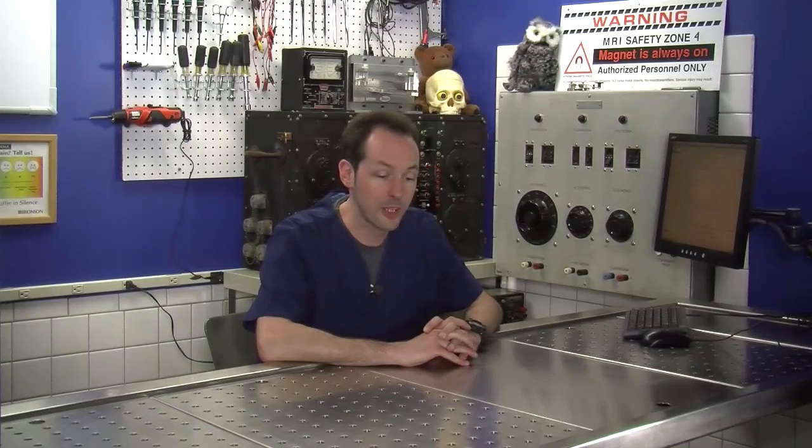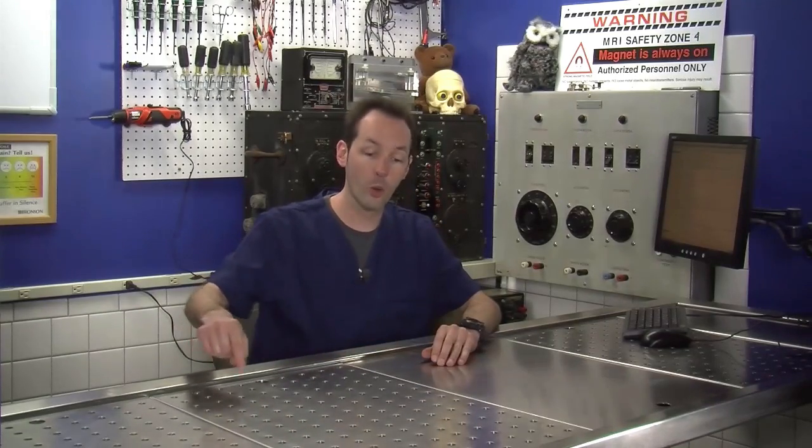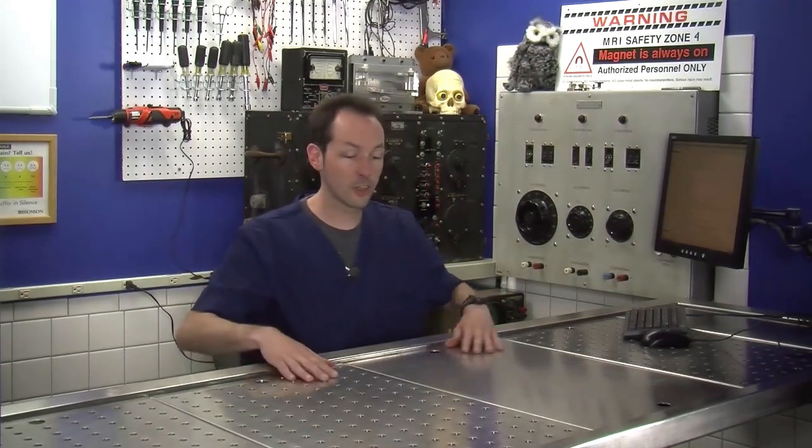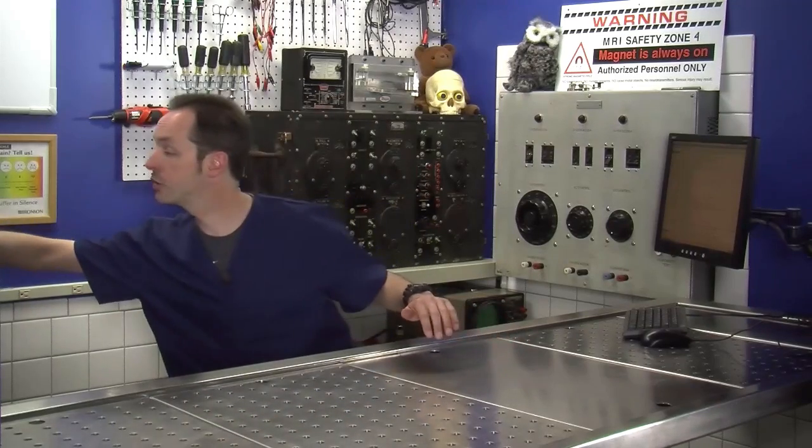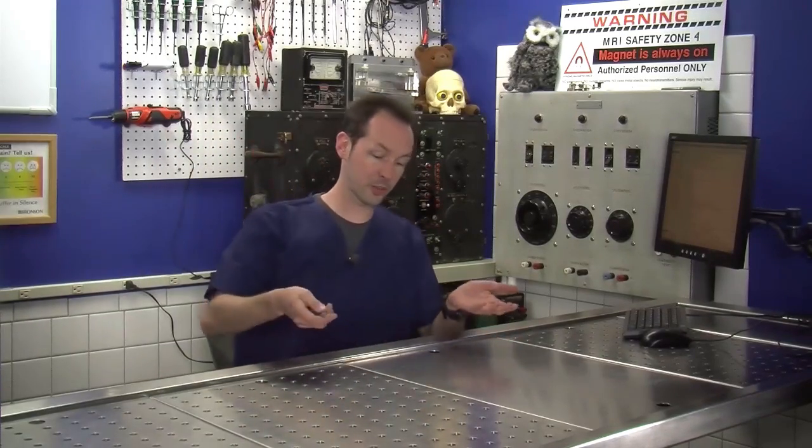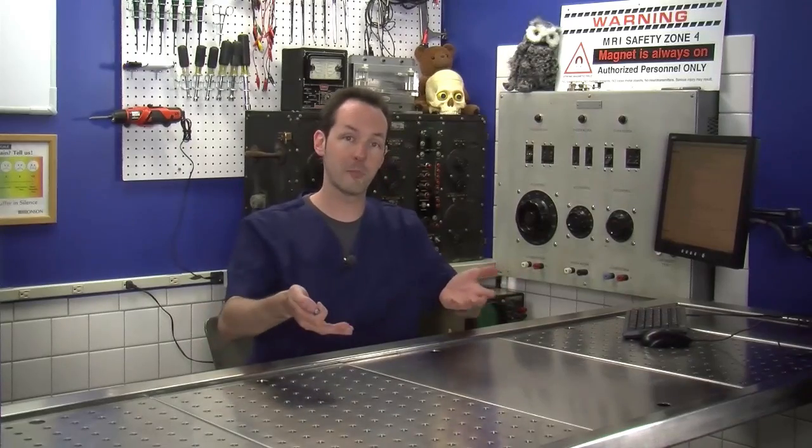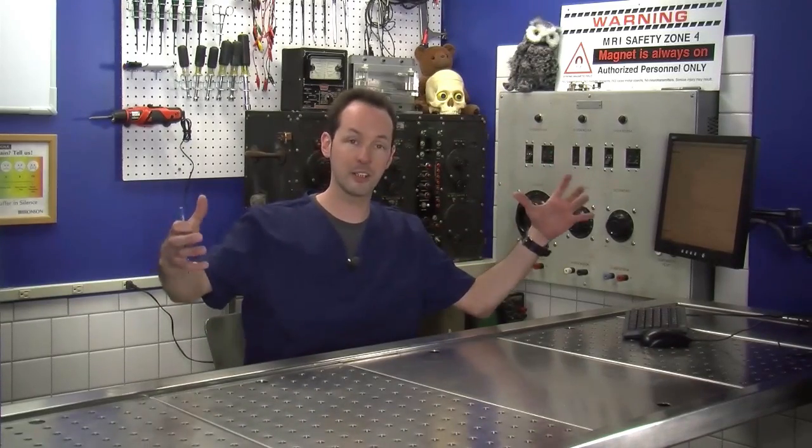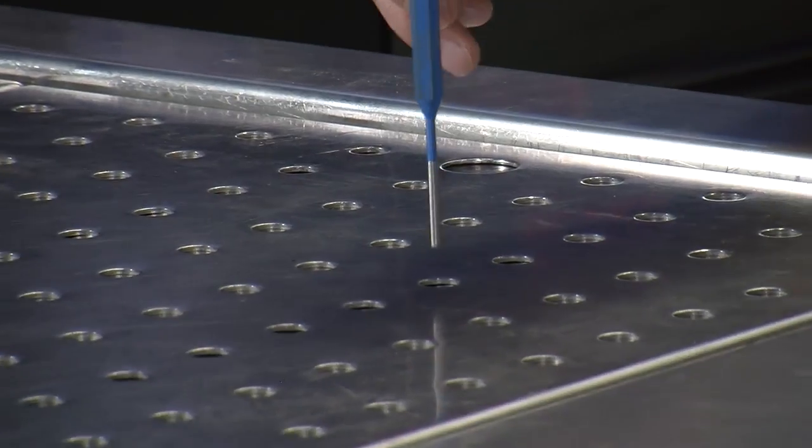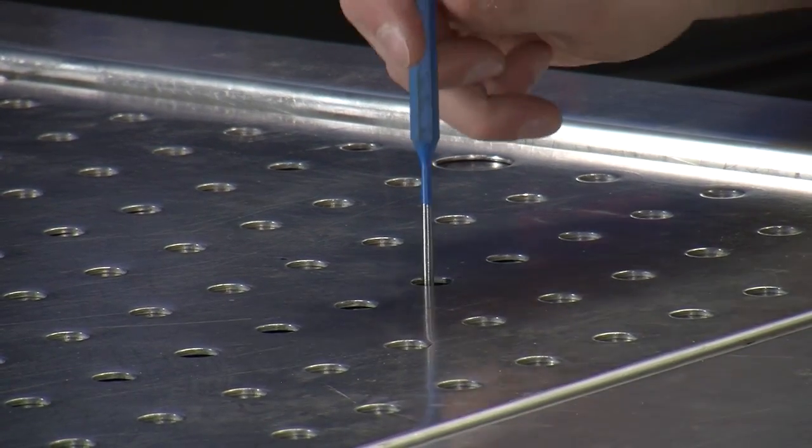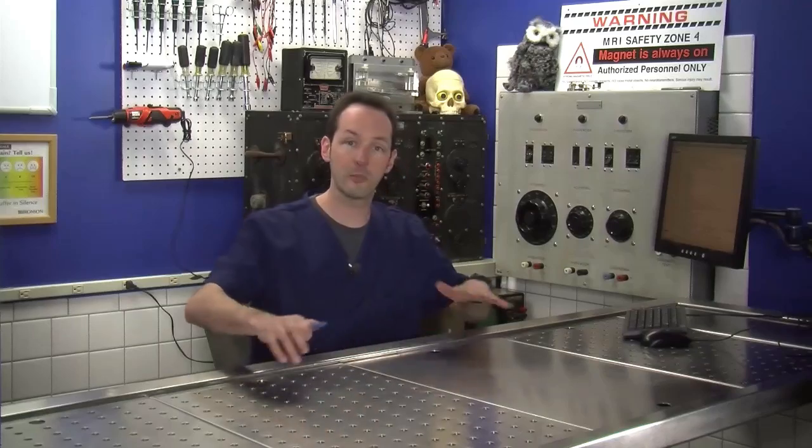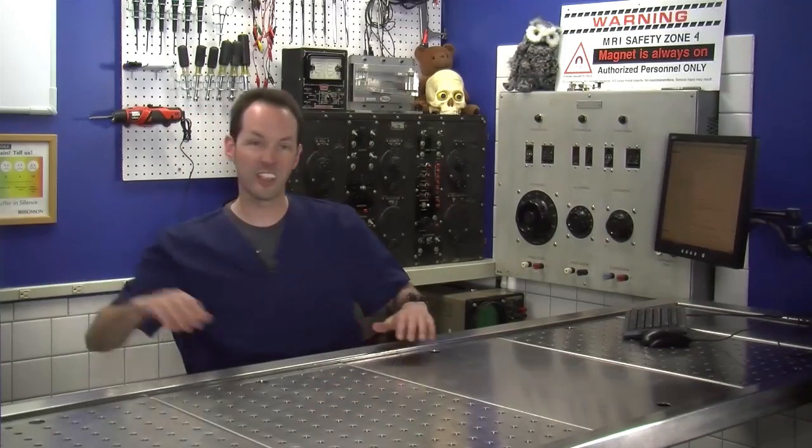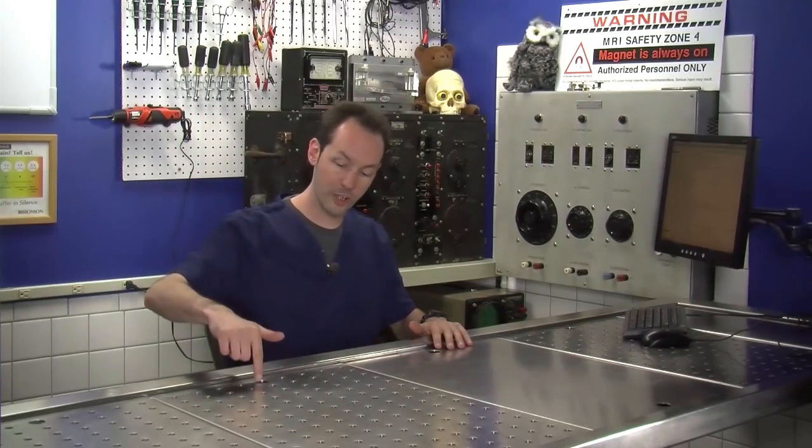The first question we get asked and we've gotten this question a million times is how do you keep things from falling through the holes? That's easy. The holes, while they look like they go right through, don't. They're actually, we put mechanical rubber roofing compound on the back, these big giant band-aids, and if you look closely at the holes, things won't go through them. But the rubber is black so it doesn't mess up the shot. So that's our nifty bit of Hollywood there, but the holes aren't actually holes.